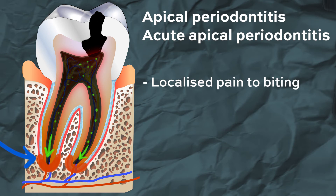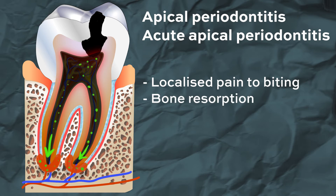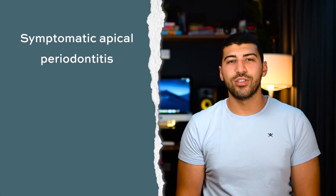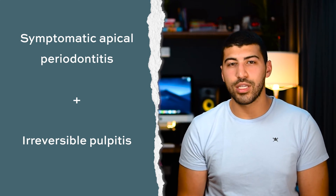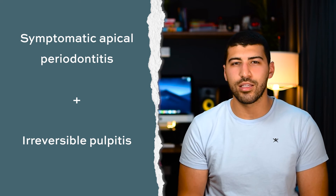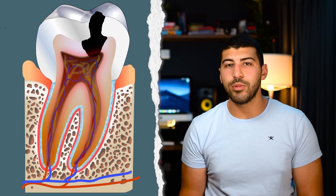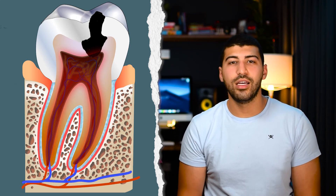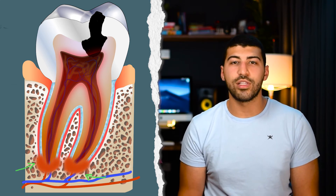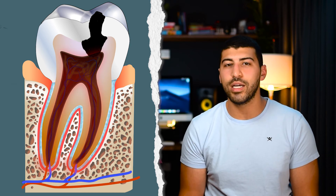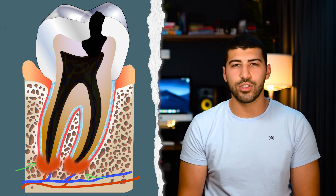The bacteria in the necrotic pulp will also leach toxins through the apex, causing a chronic inflammatory response which leads to bone resorption. If enough bone resorption occurs, this will be seen on the radiograph as an apical radiolucency. Symptomatic apical periodontitis often presents with symptoms of irreversible pulpitis as well, because this is all a dynamic process — one disease leads to another and some diseases happen at the same time. So as the pulp is inflamed, a person might experience symptoms of irreversible pulpitis, and now that the PDL is also inflamed, they may also experience periapical symptoms. But if left untreated, the pulp might die and they might only experience periapical symptoms.